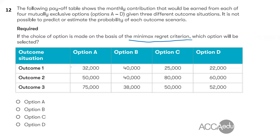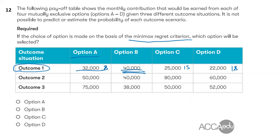The states are as follows. If outcome 1 occurs and we chose option A with a contribution of $32,000, the highest contribution under outcome 1 is $40,000 from option A — so if we chose option A, we have $8,000 regret; option C gives $15,000 regret; option D gives $18,000 regret. These are found by subtracting each value from the maximum contribution.